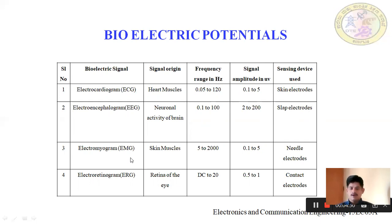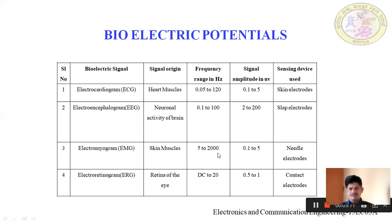Next is the electromyogram — EMG. Myo means muscle; our body will have muscles. Electromyogram means the signal generated by the muscles. Any particular muscle, when it is in action, will generate a signal — that signal is called an electromyogram. It has a frequency ranging from 5 to 2000 hertz and 0.1 to 5 microvolts of voltage signal. A needle electrode is used to record the signal.